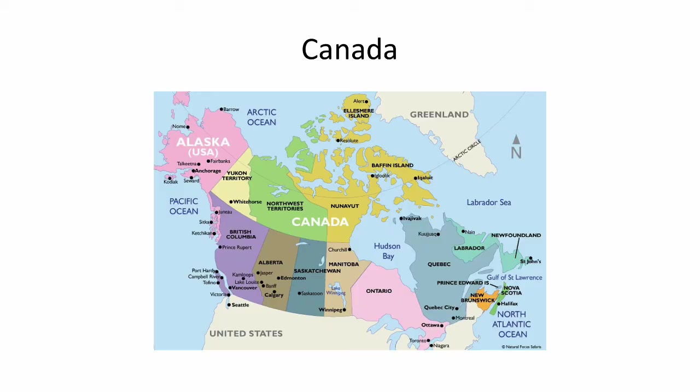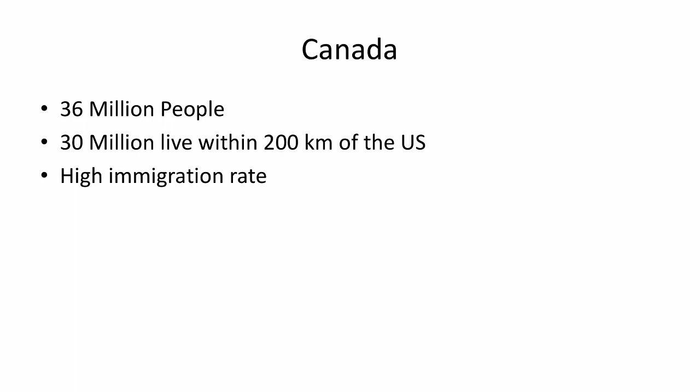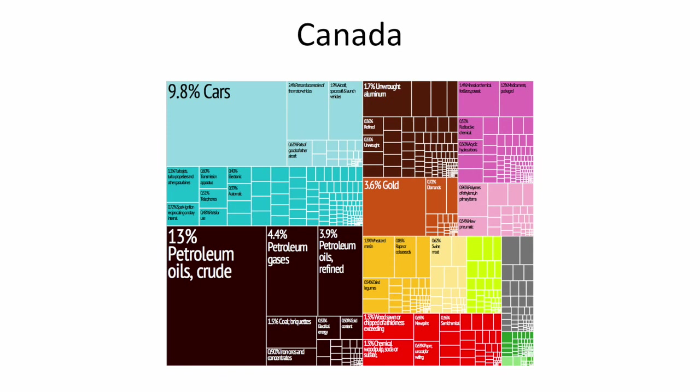Canada is a nation of 36 million people, most of whom live in a narrow band within 200 kilometers of the US border. We have a very high immigration rate — expected to receive about 500,000 immigrants per year, with a settlement goal of about 350,000. That leads to interesting healthcare scenarios, particularly with health literacy, as assimilating these often very vulnerable people into the Canadian healthcare system is often very difficult.